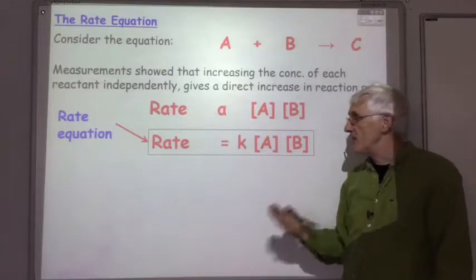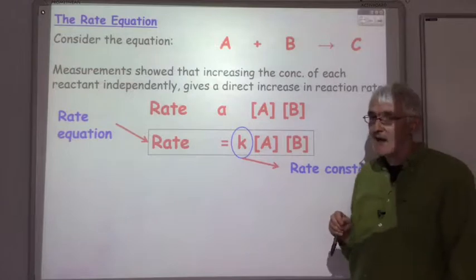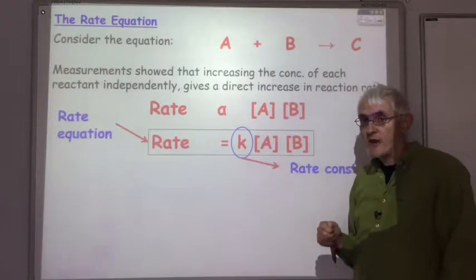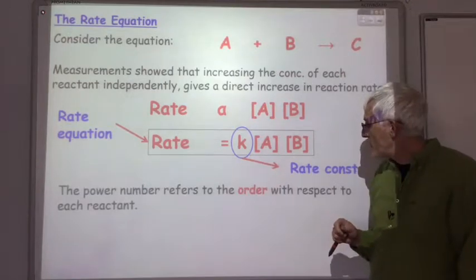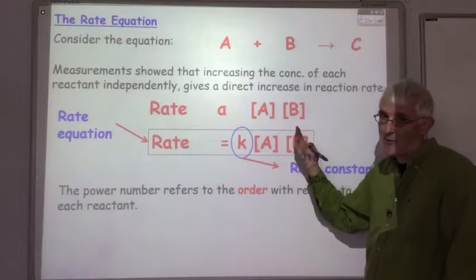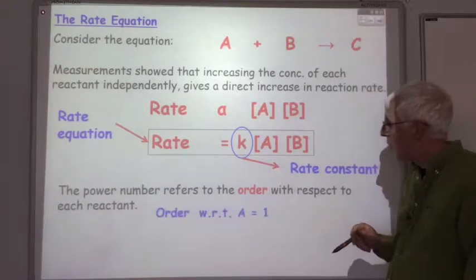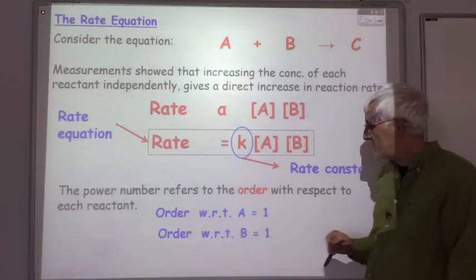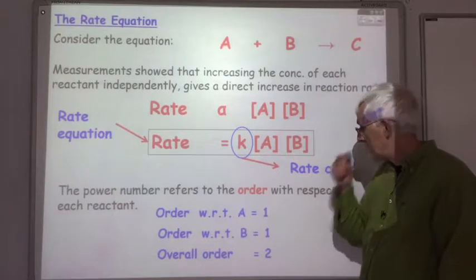Anytime you're asked to write a rate equation you're being asked to write something like this. The small k is called the rate constant. The other thing you can work out from the rate equation is the order of the reaction with respect to each reactant and the overall order of the reaction. The order is the power number to which A and B are raised. A is to the power 1, B is to the power 1. So the order with respect to A is 1, the order with respect to B is 1, and the overall order is 1 plus 1 equals 2.